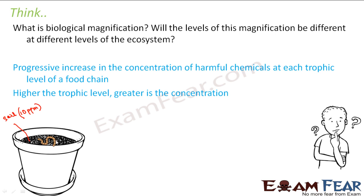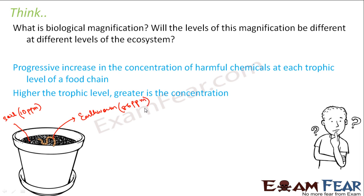So let us suppose it eats up the soil. When it eats up the soil, it doesn't eat one particle of soil — it is going to eat a lot of particles of soil. Then it is found that inside this earthworm, the concentration of DDT increased. The concentration was somewhere around 86 particles per million.